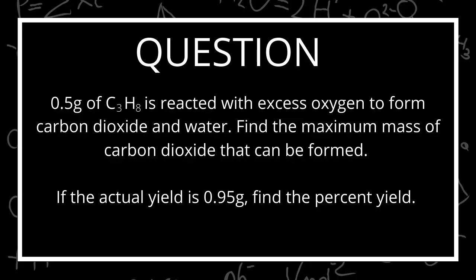The question states that 0.5 grams of propane C3H8 is reacted with excess oxygen to form carbon dioxide and water. Find the maximum mass of carbon dioxide that can be formed. So that's asking you to find the theoretical yield. If the actual yield is 0.95 grams, find the percent yield. So the first thing we'll do is find that theoretical yield.